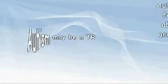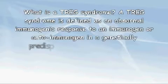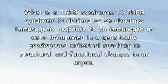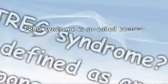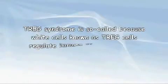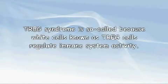Autism may be a Treg Syndrome. A Treg Syndrome is defined as an abnormal immunogenic response to an immunogen or autoimmunogen in a genetically predisposed individual, resulting in structural and functional changes in an organ. Treg Syndrome is so called because white cells, known as Treg cells, regulate immune system activity.